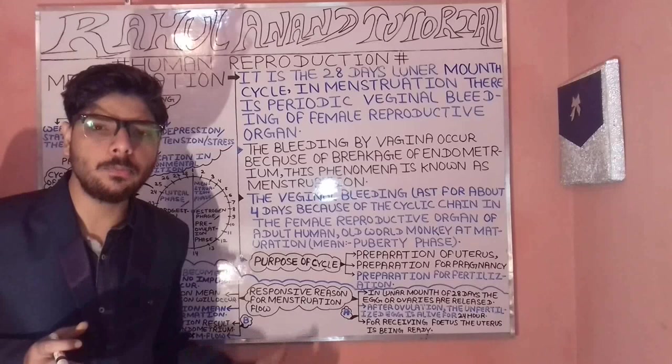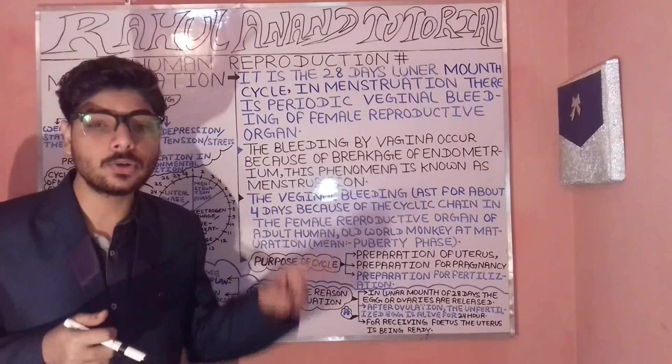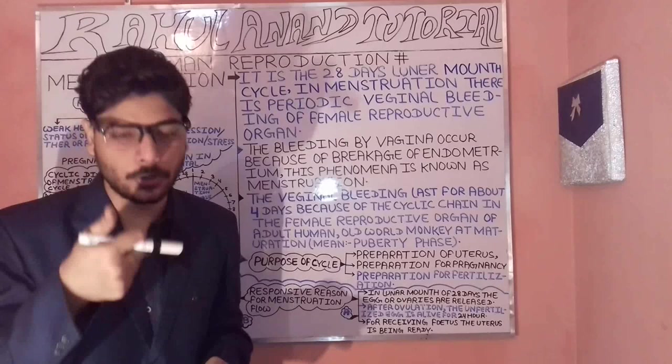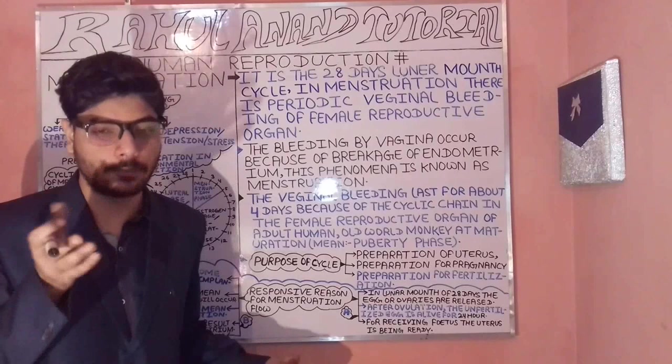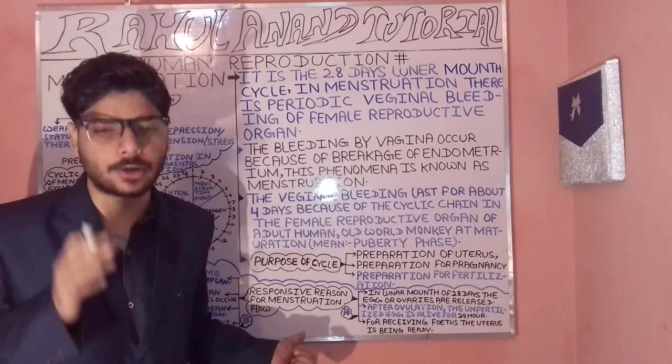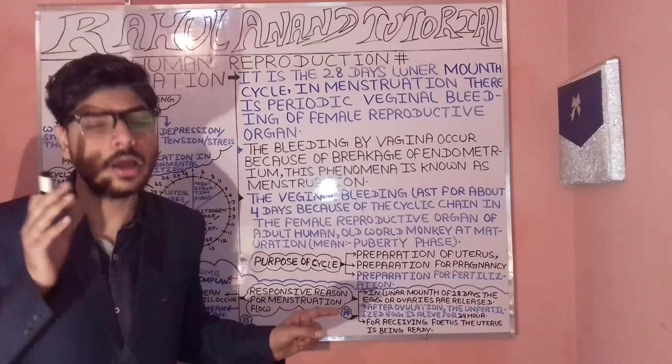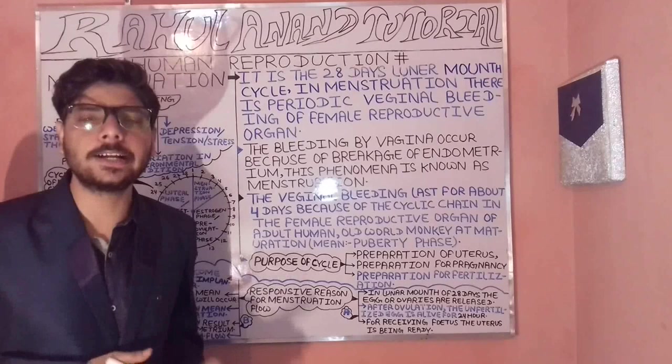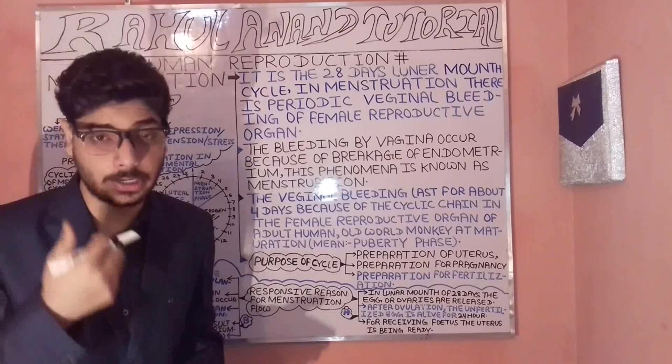There will be no fertilization, which means no zygote formation. No zygote formation leads to the breakage of the endometrium walls, in order to maintain the health of the female reproductive organ. This results in the breaking down through the vagina, which is known as the menstruation flow.